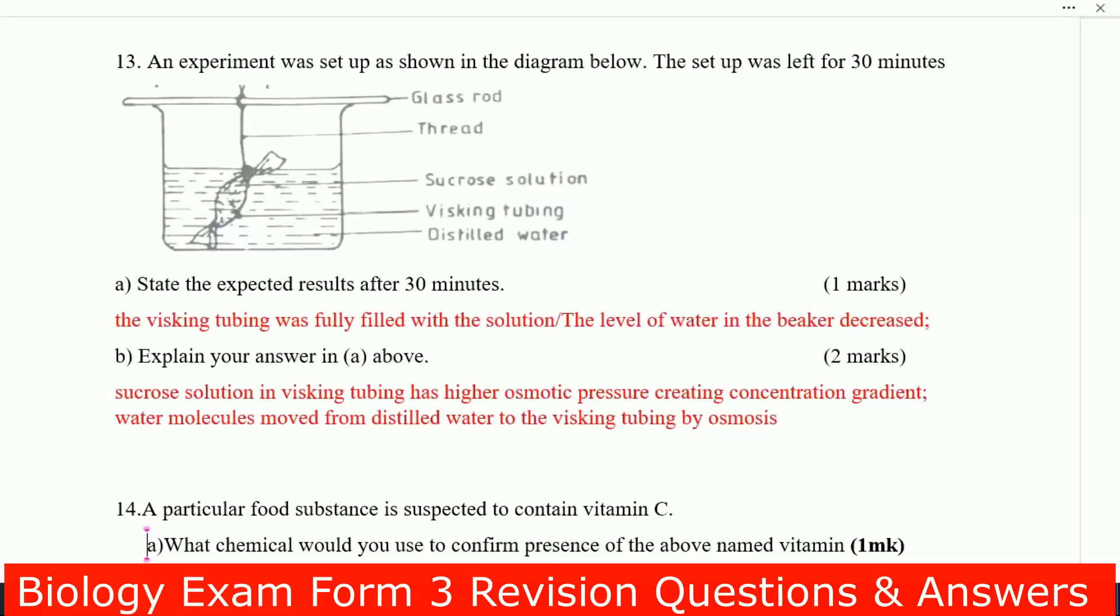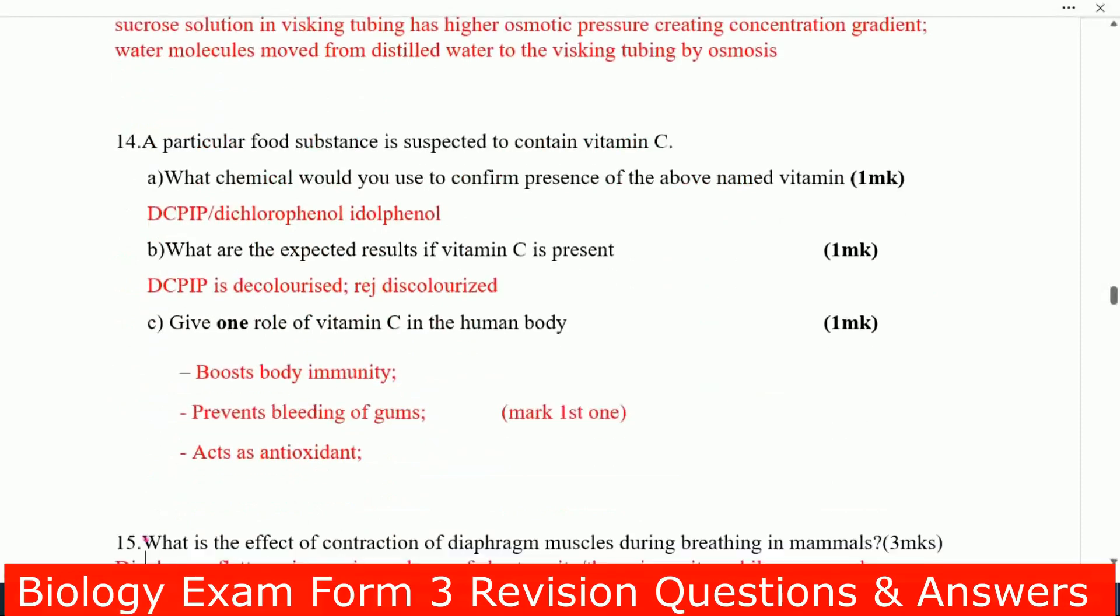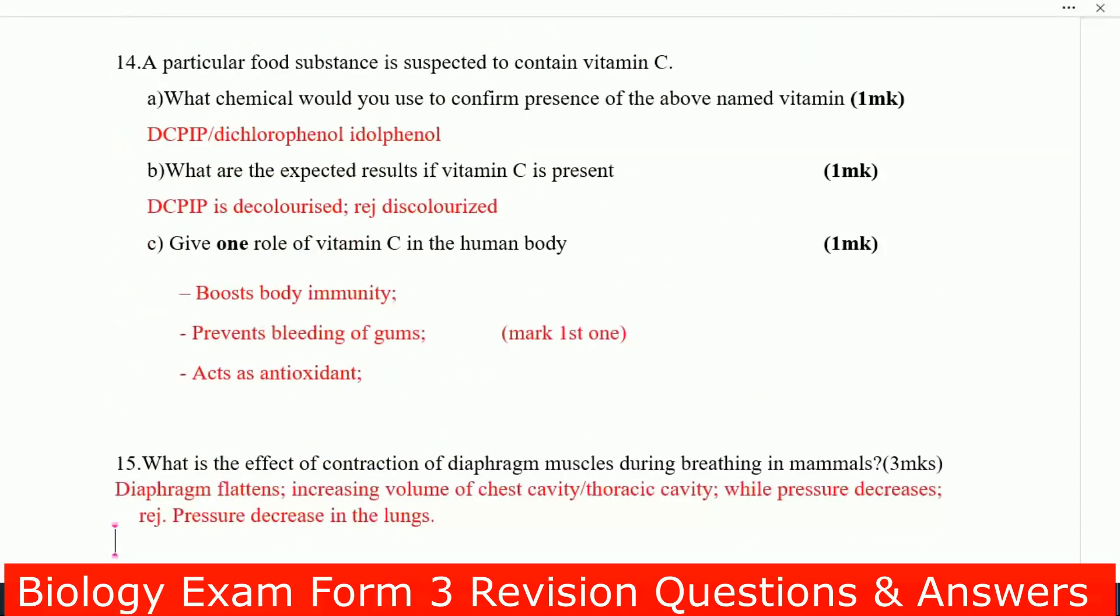What happened? The visking tubing was fully filled with the solution. The level of water in the beaker decreased. Explain your answer. Sucrose solution in visking tubing has higher osmotic pressure creating concentration gradient. Water molecules moved from distilled water to the visking tubing by osmosis.